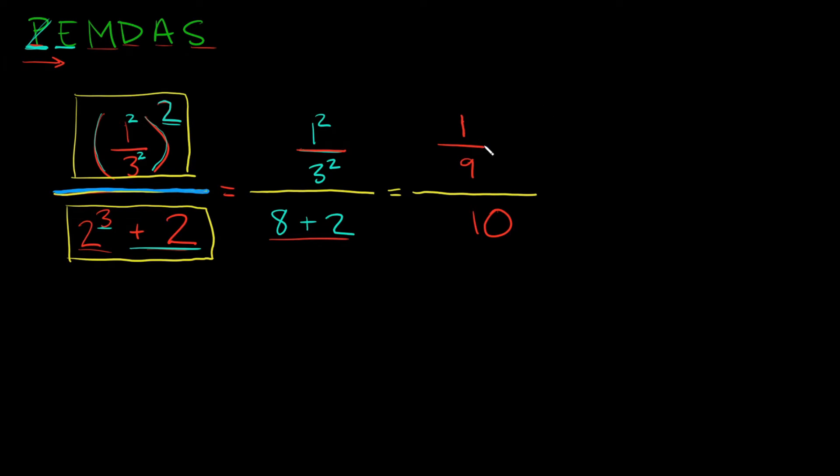Now let's look at this whole fraction over here. So on top we have one over nine. Can we simplify that anymore? Well no we can't because one ninth is just a number. Now let's go to the bottom. Down here we just have ten. Can we simplify ten anymore?